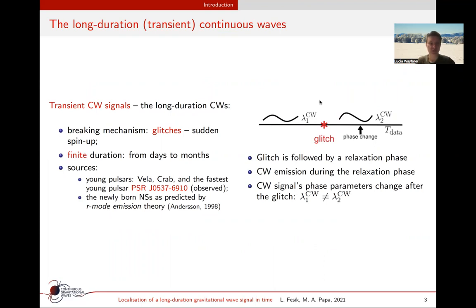For instance, the young pulsars Vela and Crab. Our special interest is the fastest young pulsar PSR J0537 in the Large Magellanic Cloud, which has systematic glitch behavior observed for 11 years by RXTE. If there is a glitch, the glitch breaks a continuous signal.